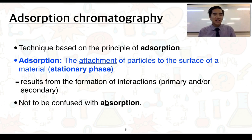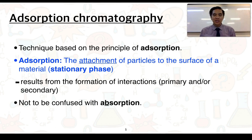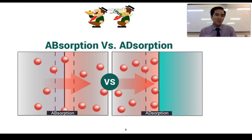Chromatography, and in particular adsorption chromatography, is based on a principle called adsorption — which sounds very similar to absorption, but they mean two different things. Adsorption is the attachment of particles to the surface of some material, which we often call the stationary phase. This occurs due to the formation of various primary and secondary interactions, or a combination of both. Please make sure you're not confusing adsorption with absorption. On this slide you can see the difference: absorption on the left represents incorporation of particles into another material, whereas adsorption on the right is about attachment or sticking onto the surface of another material.